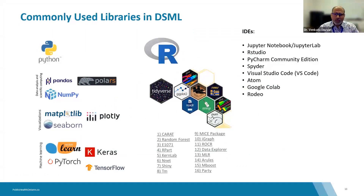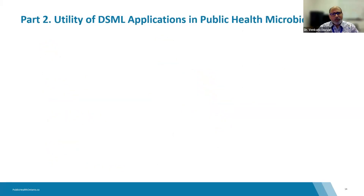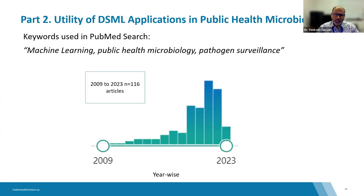Here are the commonly used libraries for data science and machine learning. This concludes part one on the basics of data science and machine learning. In part two, we will discuss examples of ML applications in microbiology. A quick PubMed search using relevant keywords found 116 studies since 2009, with the use of machine learning increasing since 2019.